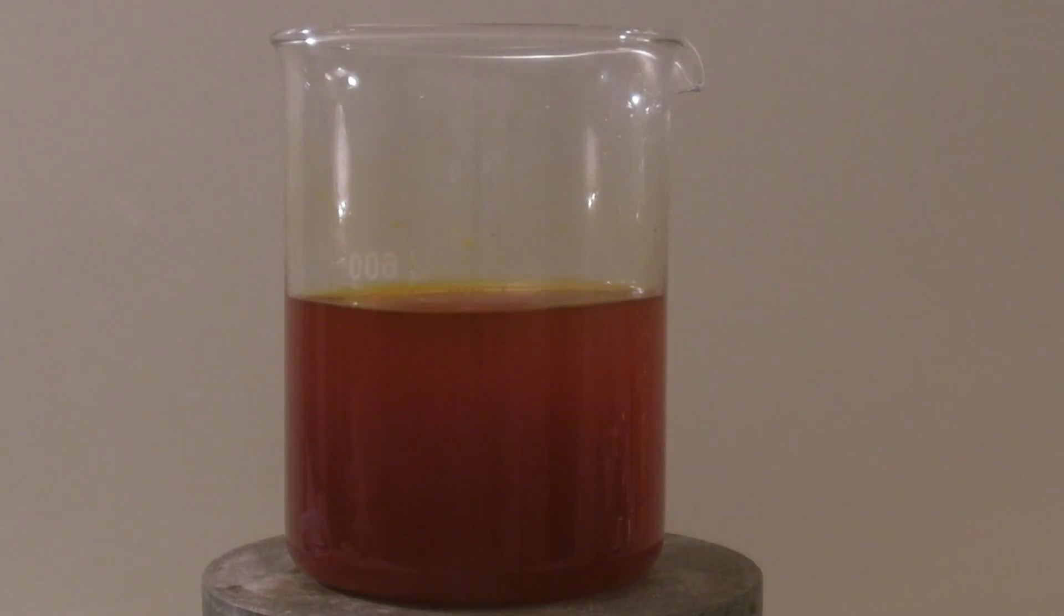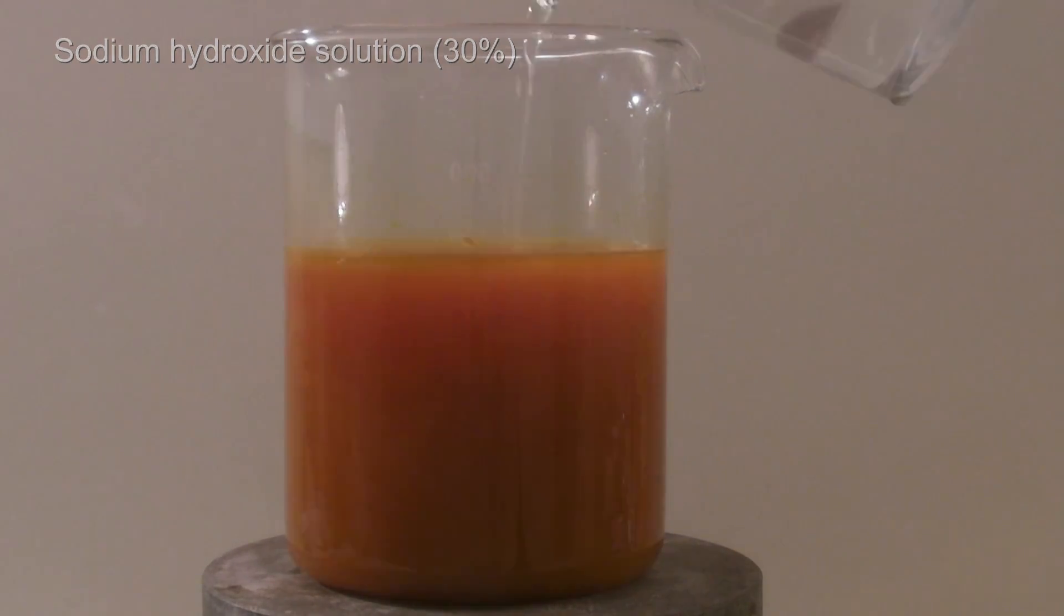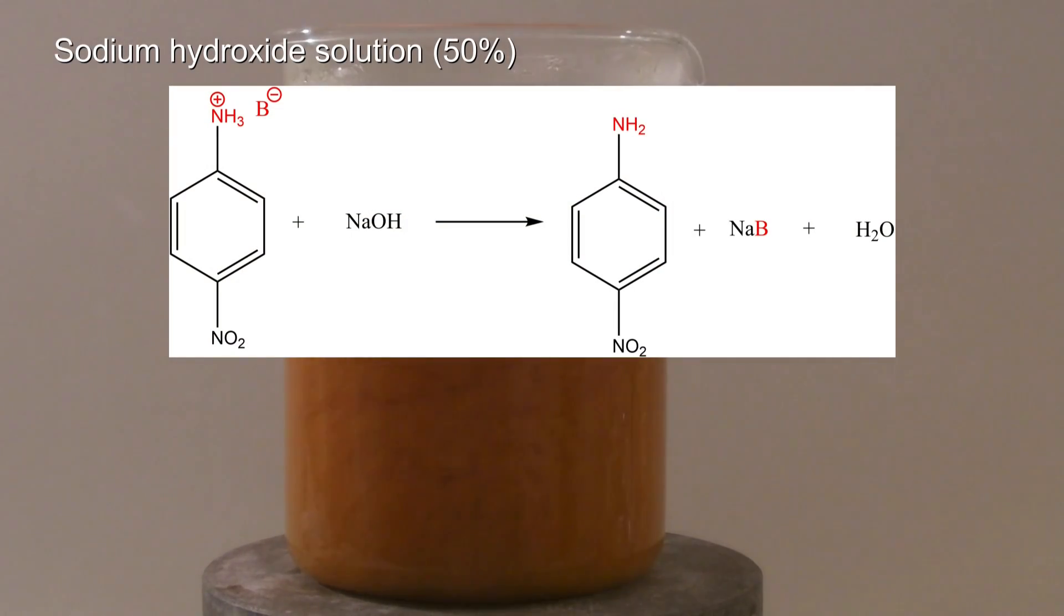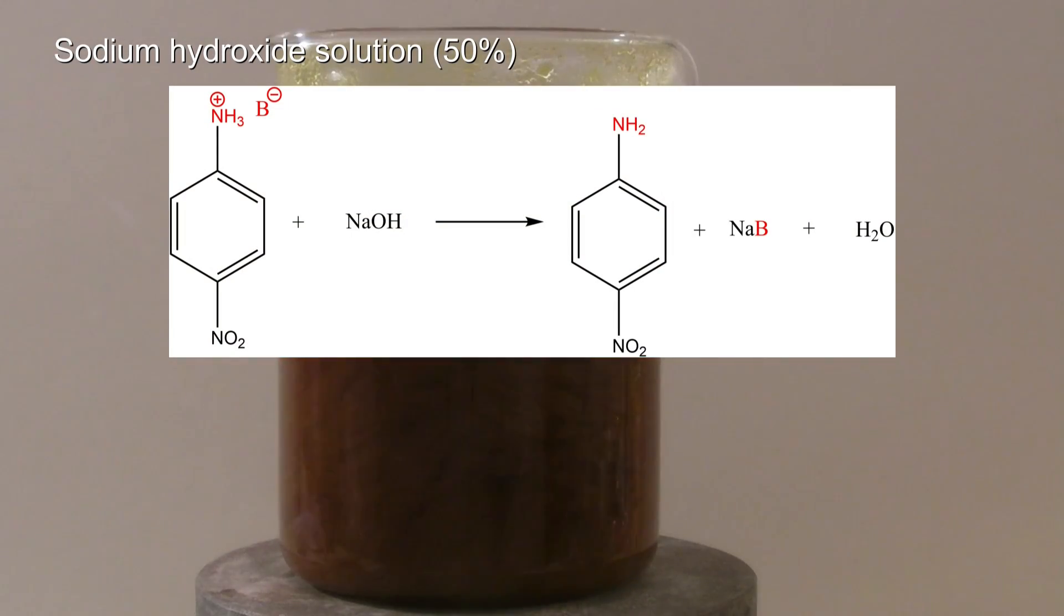The filtrate was made alkaline with 30% sodium hydroxide solution. Towards the end the beaker was almost filled up so 50% sodium hydroxide solution was used. After the addition of the sodium hydroxide solution the p-nitroaniline and the side products are present as the free base and the sodium salts of the acids are formed.